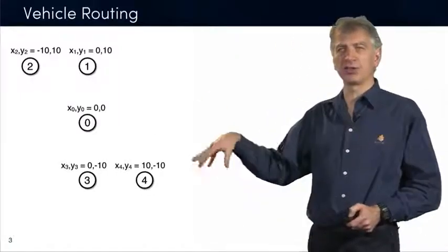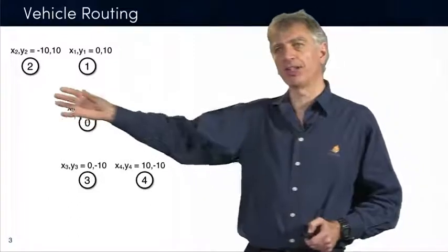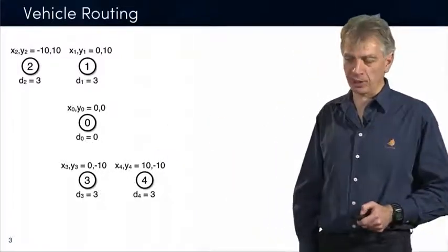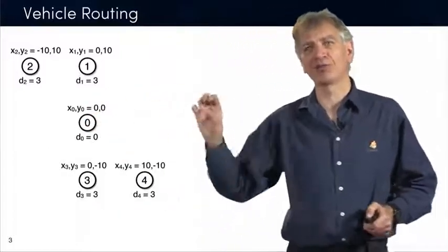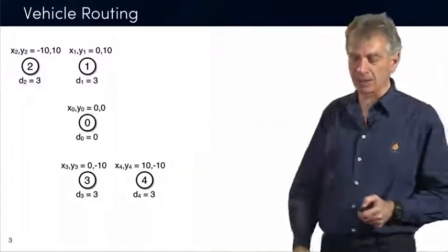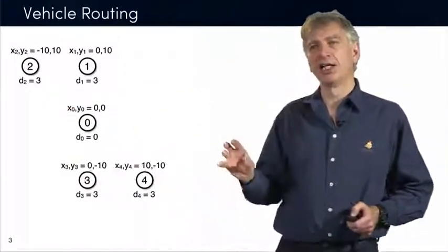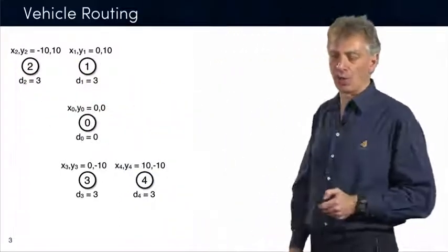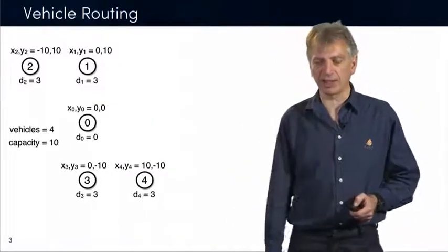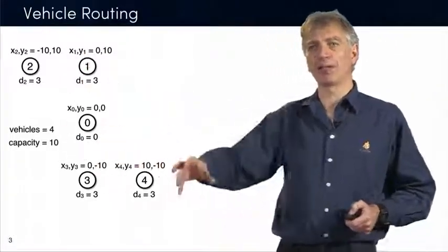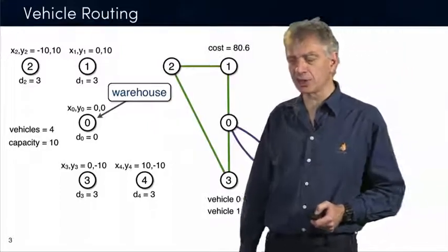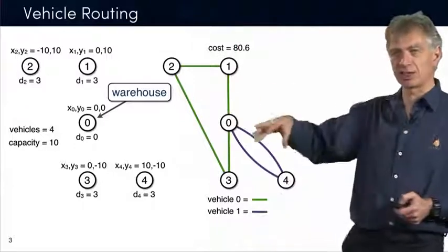So vehicle routing — here is a simple formulation where we already see some of the input data. You have a bunch of different sites. One of them is the warehouse. That's where the vehicles are starting. For Carlton and Victor, I want to call this a depot, but they like warehouse, so I'm very friendly with my collaborators. For every one of them, you see a coordinate — that's where they lie on the plane — and you see also some demand. Think of it as the weight that you are collecting at every one of these locations. You will have four vehicles, and the capacity of each vehicle is 10.